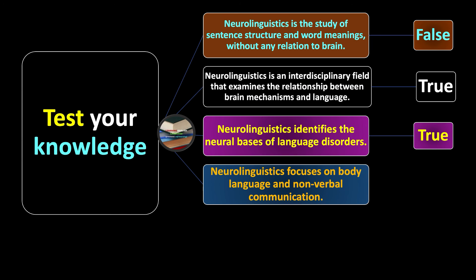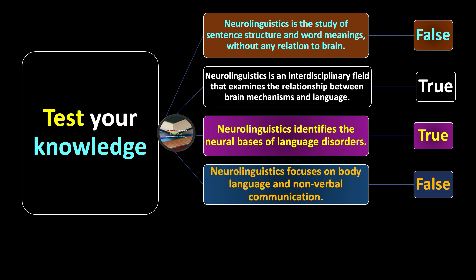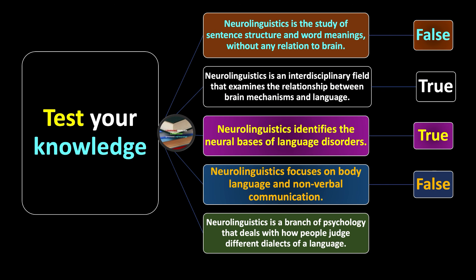Fourth: neuro linguistics focuses on body language and non-verbal communication — true or false? That is false. Fifth: neuro linguistics is a branch of psychology that deals with how people judge different dialects of a language — true or false? That is also false.